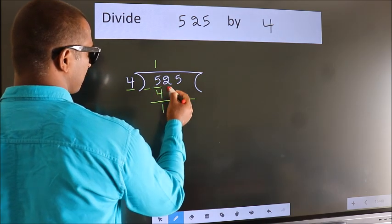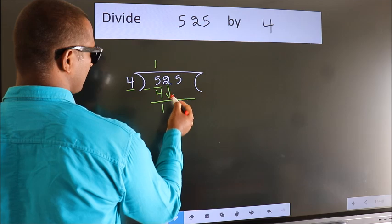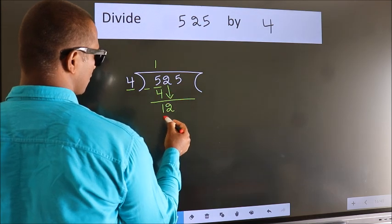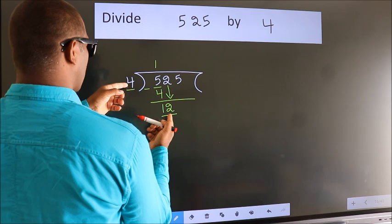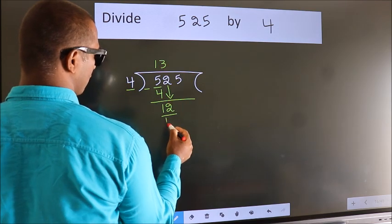After this, bring down the beside number. So, 2 down. So, 12. When do we get 12 in the 4 table? 4 threes, 12.